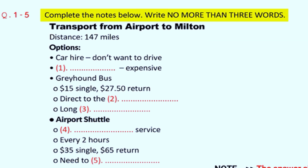Section 1. You will hear a telephone conversation between a passenger and an official at the Land Transport Information Service at Toronto Airport. First, you have some time to look at questions 1 to 5. Now we shall begin. You should answer the questions as you listen because you will not hear the recording a second time. Listen carefully and answer questions 1 to 5.